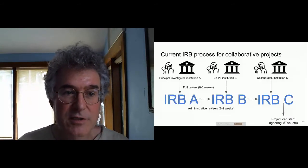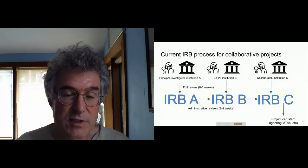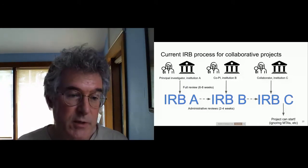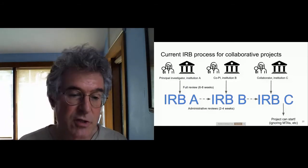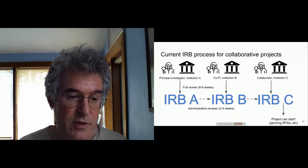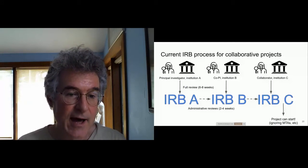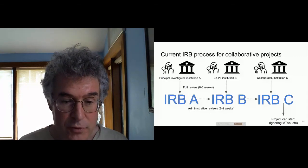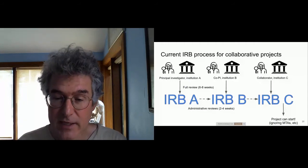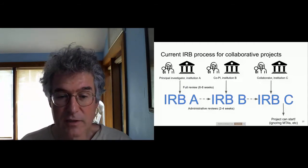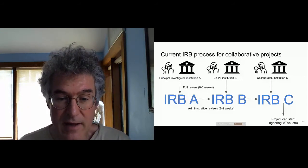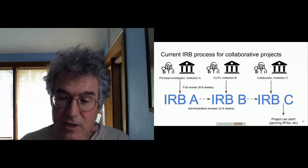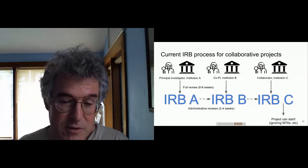The current Institutional Review Board process for collaborative projects was designed in the 20th century and is really clunky and slow. Most big research projects today have multiple investigators from different institutions, each of whom has to go through their own institution's IRB. There's typically a full review taking weeks to months at the principal investigator's institution. If approved, there's a shorter administrative review at each collaborator's institution, usually a two- to four-week process by a subset of the board. You'll end up adding another month or two, and this ignores data transfer agreements, material transfer agreements, and contracts.